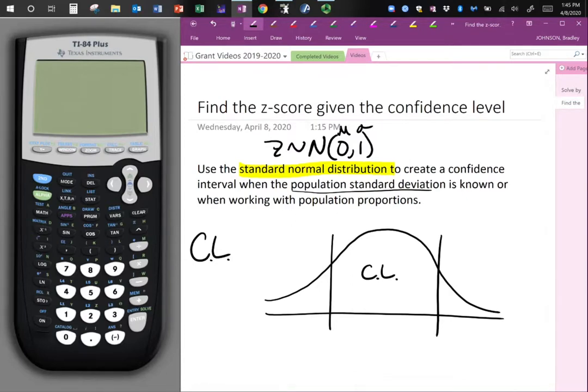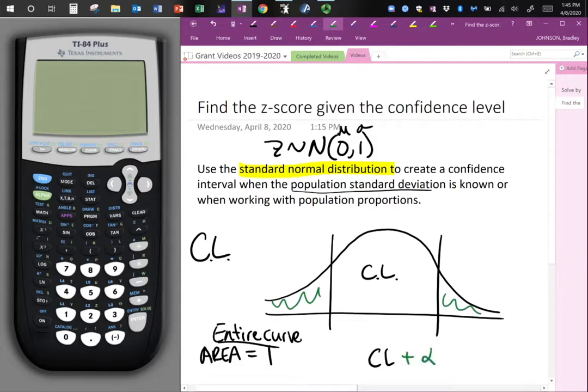Now, what we need to know, the area, so the area under the entire curve is equal to 1, right? The entire curve. Going along with that, if we have the confidence level to be the middle, well then we don't really know what these pieces here are. I'm going to just call that plus an alpha, which is that unknown part, will equal 1. So the confidence level area plus those green shaded parts, the alpha, would add up to 1.